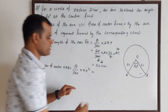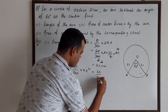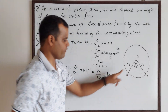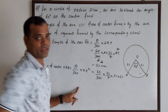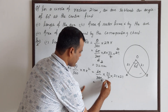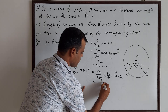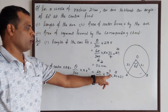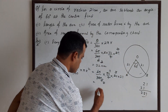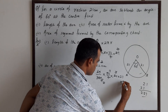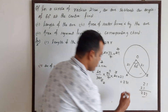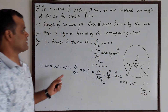Theta is 60 degrees. So: 60/360 into (22/7) into 21 × 21. Simplifying: 6 into 6 is 36, then 7 cancels with 21 giving 3, and 22 into 21 divided by 6 simplifies to 11 × 21, which is 231. The area of the sector is 231 cm².